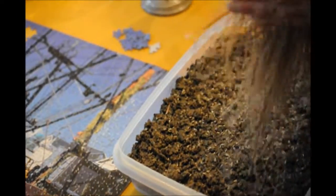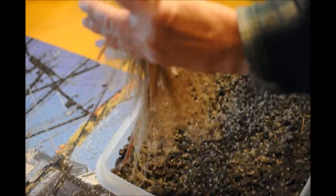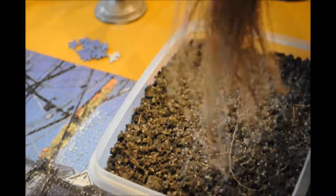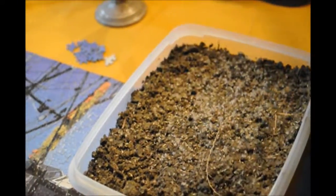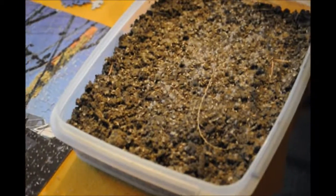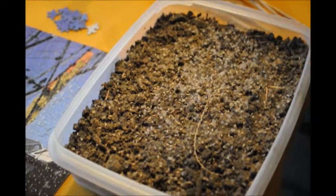Now what we're going to do after we're finished this is put a little piece of saran wrap on top of this so it doesn't dry out quickly, and then we're going to put some little holes in the saran so the plants can breathe. There we are, that's a good amount.